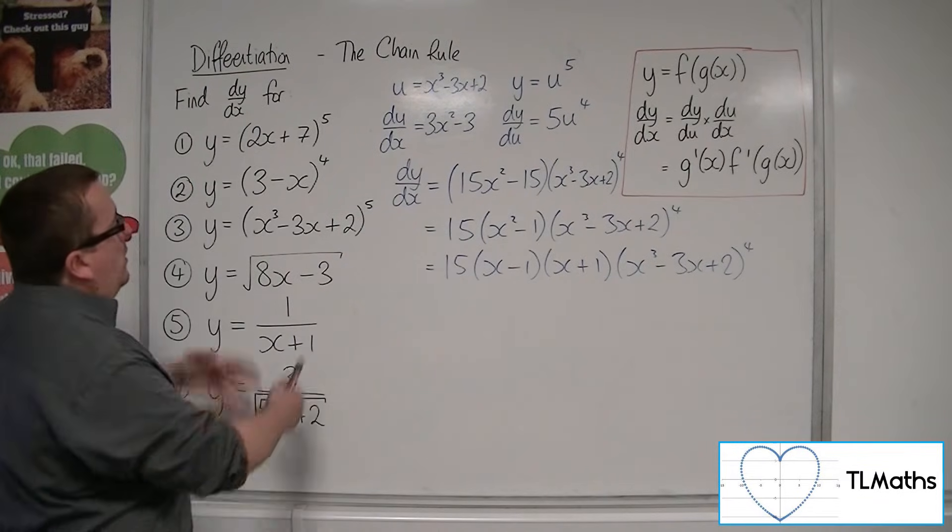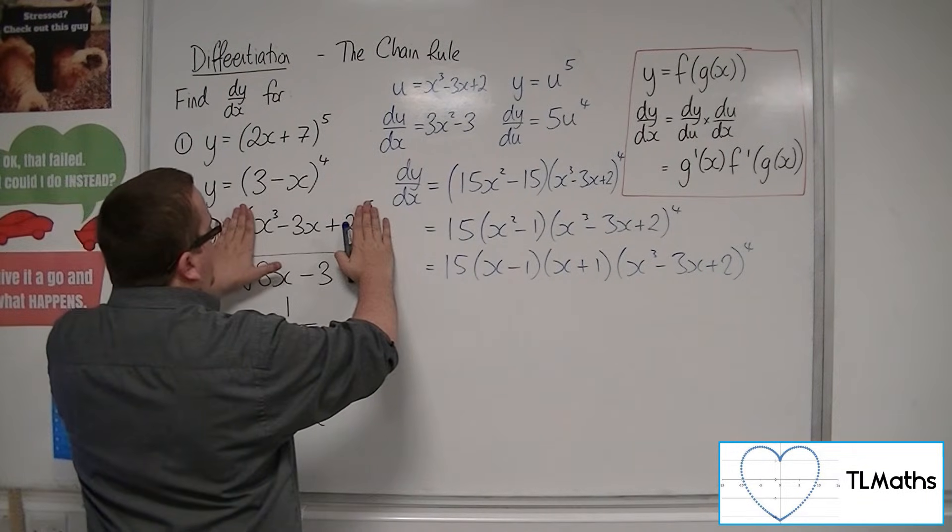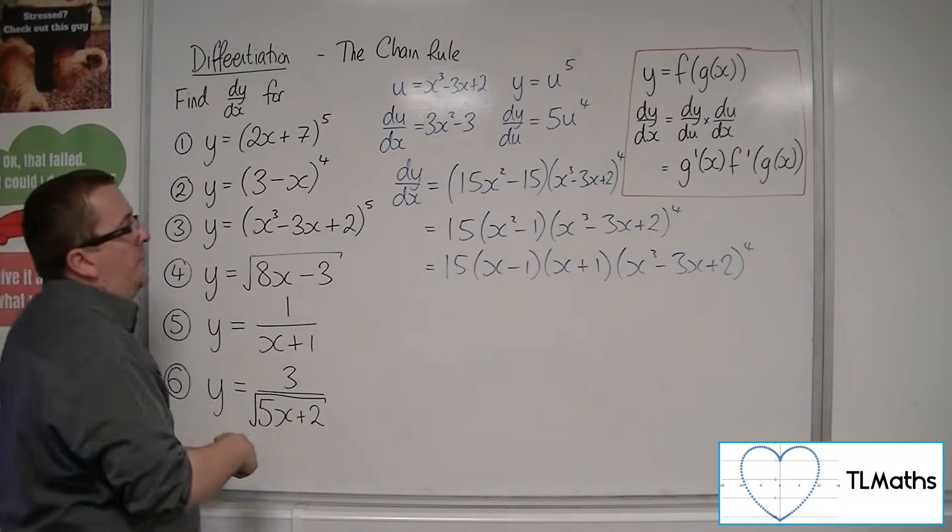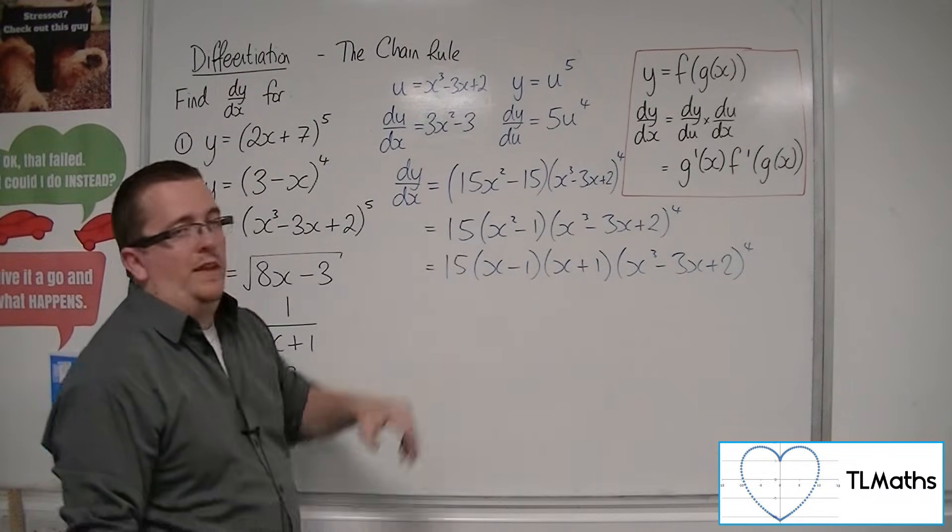Now, what happened then? Well, the derivative of what's inside came outside. The 5 came down to the front, and we took 1 off the power. That's what got us to that result.